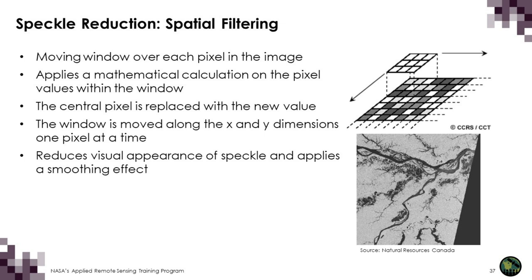Another way to reduce speckle is to do a time series averaging. If you have multiple radar images you can average them, which will reduce the speckle while preserving your original resolution.